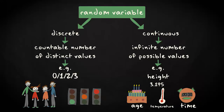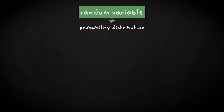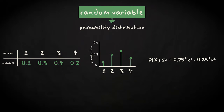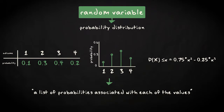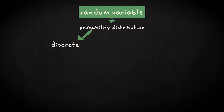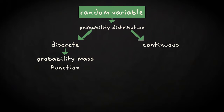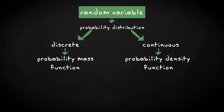The values that a random variable may take can conveniently be described by a probability distribution. A probability distribution can take the shape of a table, a graph, or a mathematical equation, and is defined as a list of probabilities associated with each of the values that a random variable may take. Every random variable has by definition a probability distribution. The probability distribution of a discrete random variable is called a probability mass function, while for a continuous variable it is called a probability density function. I will explain the reason for this distinction in a moment.